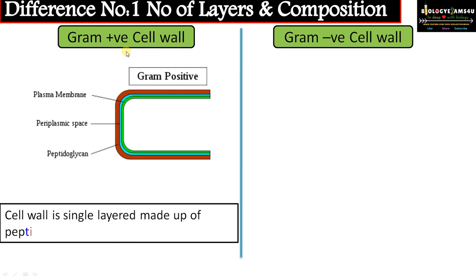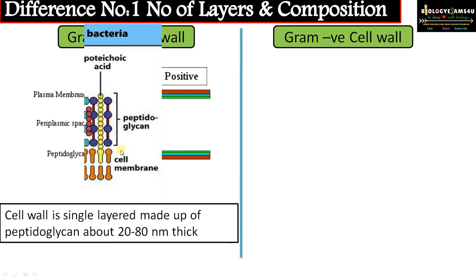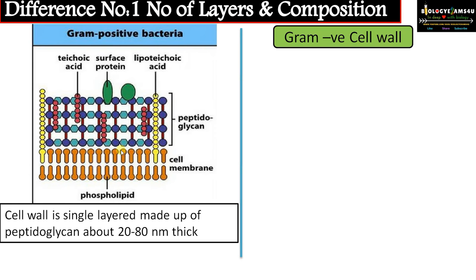In the case of gram positive cell wall, as you can see, this green colored wall is the plasma membrane. On the outer side of the plasma membrane there is a thick peptidoglycan wall. So in gram positive bacteria the cell wall is a single layer made up of a thick peptidoglycan layer of about 20 to 80 nanometers thick.